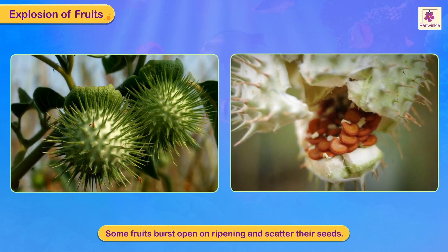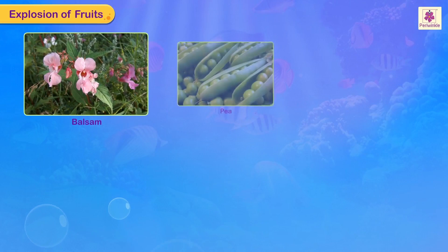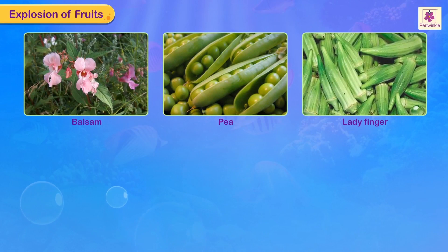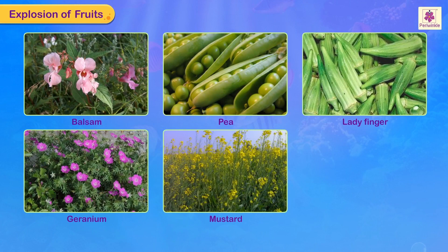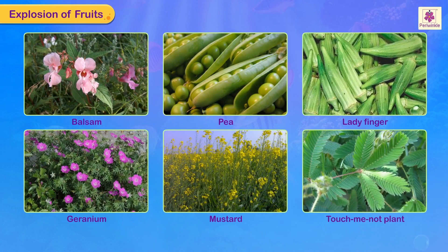Explosion of fruits: some fruits burst open on ripening and scatter their seeds. Balsam, pea, lady finger, pepper, geranium, mustard, and touch-me-not plants disperse their seeds in this way.